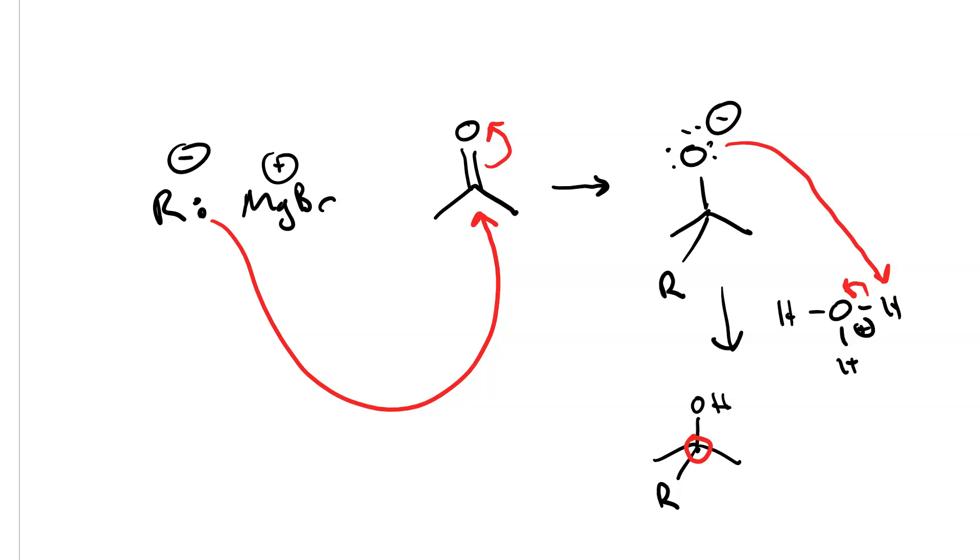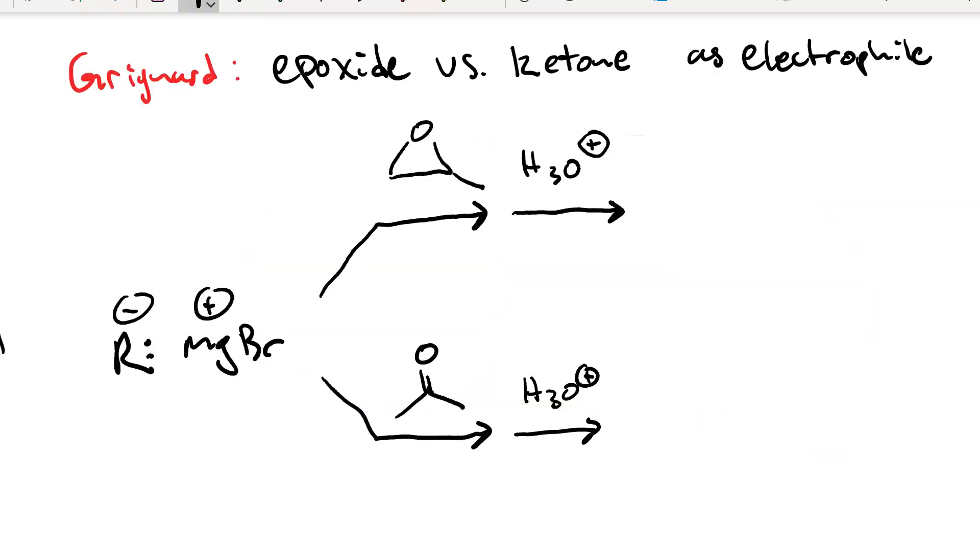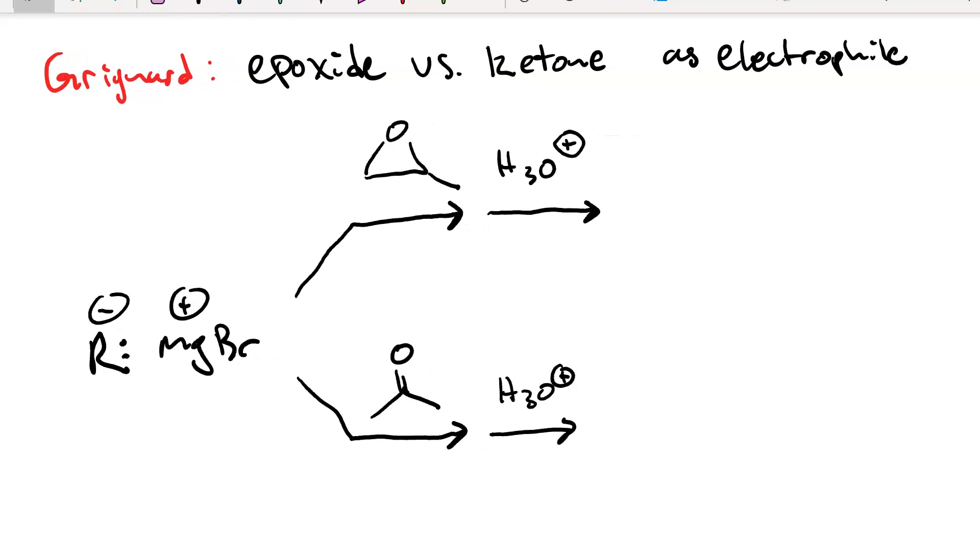So instead of 1,2 substitution, it's 1,1. So just to sum up, the electrophile you use in a Grignard reaction determines different regiochemistry. If you use an epoxide, your R group ends up adjacent to the alcohol. If you use a ketone, your R group ends up on the same carbon as the alcohol.